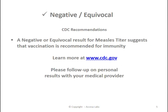A negative or equivocal result for the measles titer suggests that vaccination is recommended for immunity based on CDC guidelines. You can learn more about those at the CDC website. Please follow up on personal results with your medical provider.